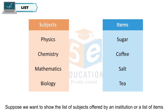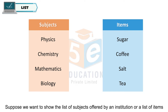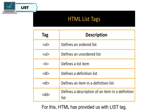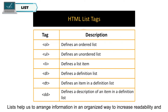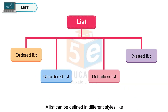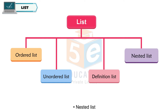Suppose we want to show the list of subjects offered by an institution, or a list of items available in a store. For this, HTML has provided us with the list tag. Lists help us to arrange information in an organized way to increase readability and better understanding. A list can be defined in different styles like ordered list, unordered list, definition list, or nested list.